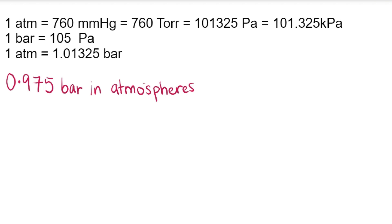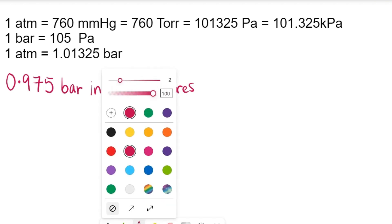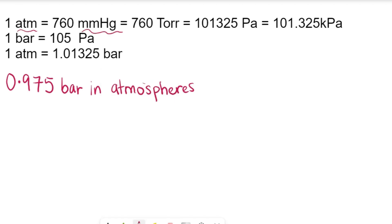Bar and atmospheres are both units of pressure, just like the other information right here: atmospheres, mmHg which is the same thing as Torr, Pascals, kiloPascals, and bar. All of this information, all six of them, are different units of pressure. Now we're just supposed to express 0.975 bar in atmospheres.